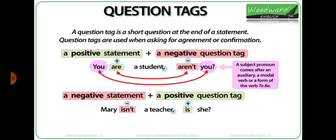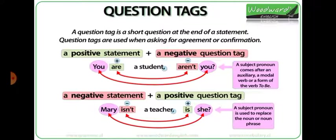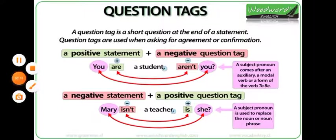A negative statement is followed by a positive question tag. 'Mary isn't a teacher, is she?' — 'Mary isn't' is negative, so the question tag needs to be positive: 'is she.' Notice how we don't repeat the noun 'Mary' in the question tag. We use the subject pronoun 'she' to avoid repetition. A subject pronoun is used to replace the subject in the statement if it appears as a noun or noun phrase.